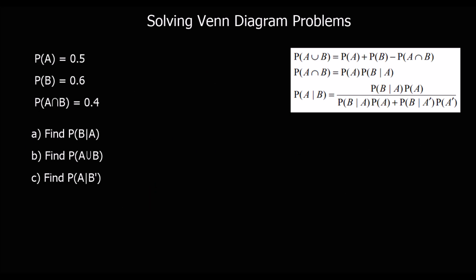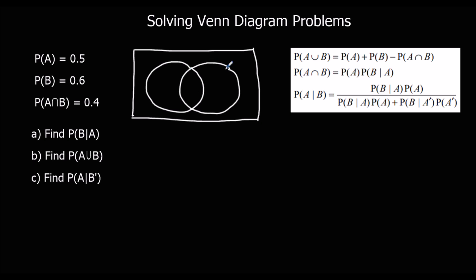One more question — you can pause and try it first. We draw the Venn diagram: A∩B is 0.4. P(A) is 0.5; we've already got 0.4, so 0.1 left. P(B) is 0.6; we've got 0.4, so 0.2 left. These all add up to 0.7, so the outside must be 0.3.